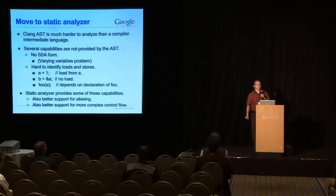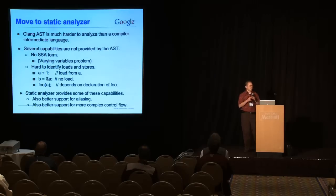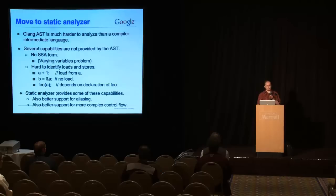We've already talked about the SSA form problem. The loads in stores are another issue. A minor one, really, but irritating, which is that you can't just look at the AST and figure out when a store occurs. You have to always look at everything that surrounds the particular expression that you're seeing. So, my understanding is the static analyzer provides some of these capabilities and might also solve some of my aliasing and control flow problems, but it's not clear whether that's going to be an appropriate framework to implement this or not. But that's what we're thinking about now, is maybe moving some of this to the static analyzer.